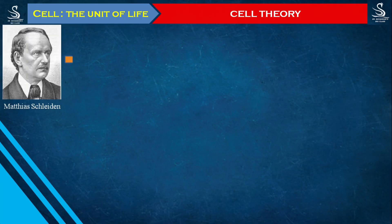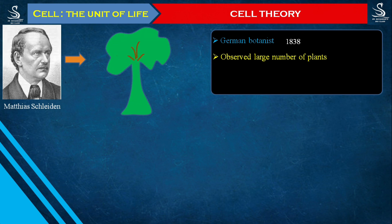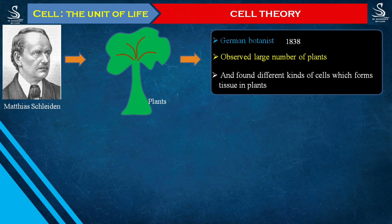In the year 1838, Matthias Schleiden — a German botanist — was studying plants. Botanists are the ones who study plants, and Schleiden was also studying on plants. After observing a large number of plants, he made one conclusion: that plants are made of different kinds of cells, and those cells are forming the tissues inside the plant. That was the important conclusion Schleiden made in the year 1838.